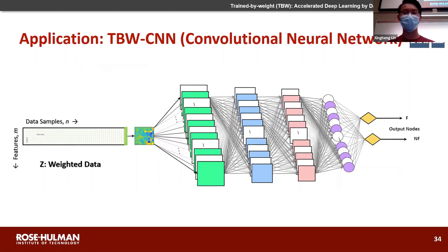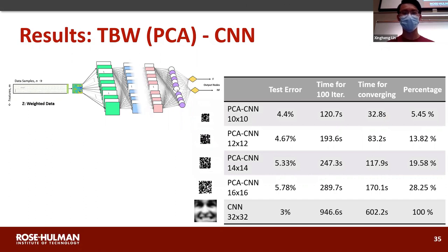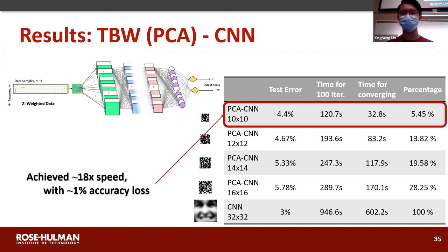The second application is Train by Weight combined with a convolutional neural network. Compared with the original CNN, which took about 900 seconds — about 16 minutes — for 100 iterations on 32 by 32 images, Train by Weight with 100 features allowed the CNN to converge in about two minutes, with only a little over 1% accuracy loss. This represents an 18 times faster training and testing speed — a very significant result. The actual input data shows the image size was reduced significantly, smaller than the original.